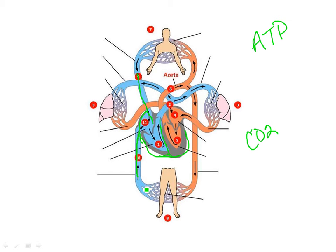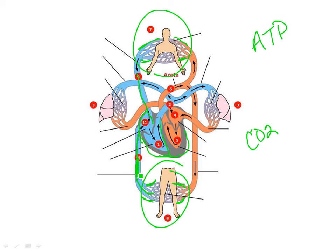We're bringing that deoxygenated blood back. The lower body capillaries bring blood back through the inferior vena cava, and the upper body capillaries bring blood back through the superior vena cava, both dumping into the right atrium. From the right atrium, it's going to go into the right ventricle and then be pumped out through vessels to the lungs.